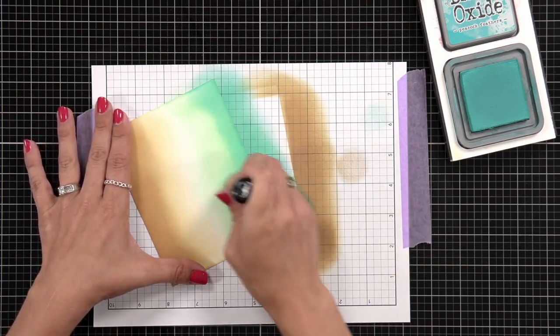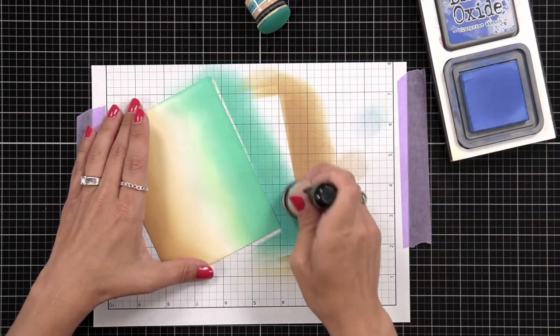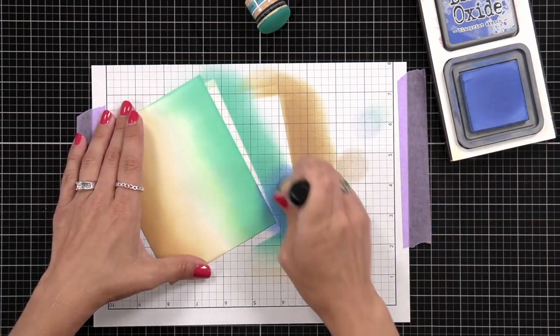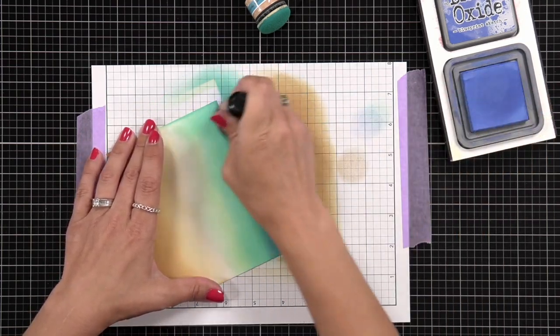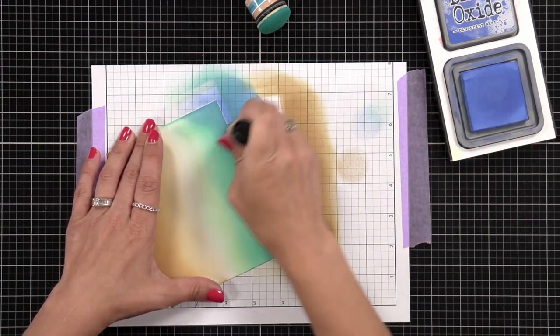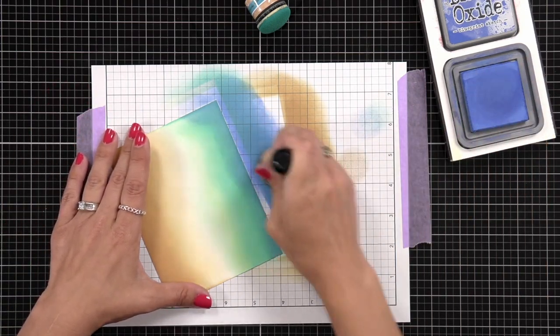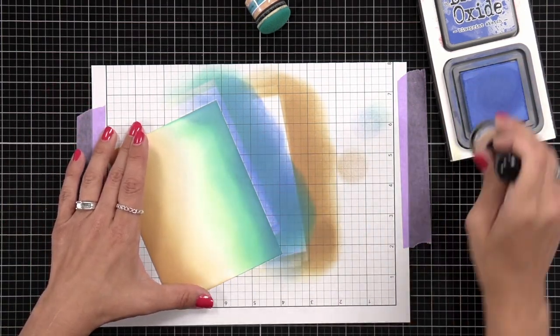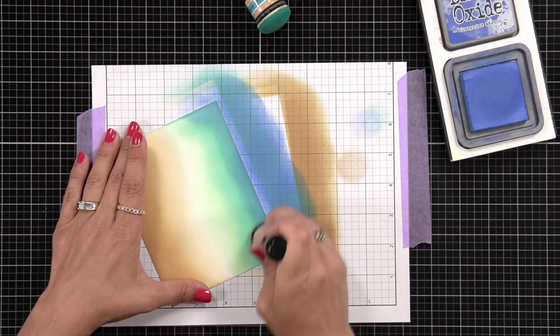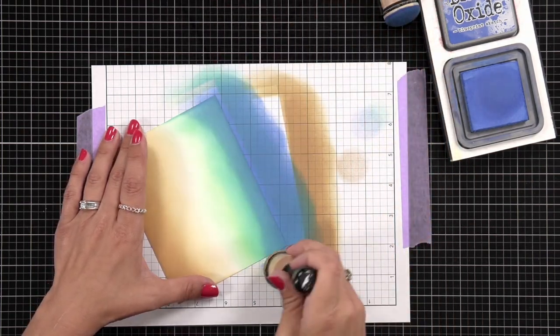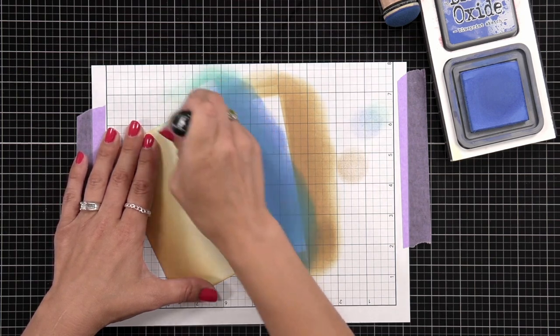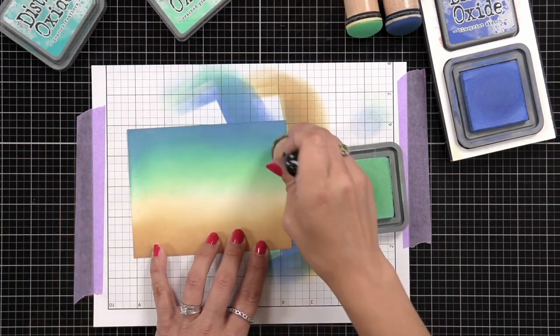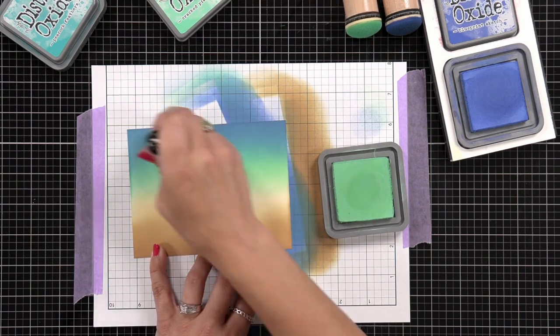Then I came in with Peacock Feathers going over the top of Cracked Pistachio, but not all the way down. Then I can come in with the Blueprint Sketch once again at the very edge there, and it just gives it a different tone, a different look because I'm layering these colors on top of each other versus just blending into one another. And I do use the tools to go back and forth between the colors and help smooth out that transition.